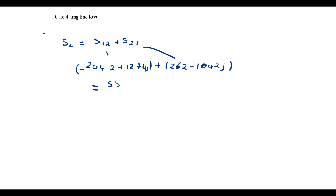Adding the two power flows gives 58 watts plus 230 VAR — the watts being the real component and the VAR being the reactive part. So what we can say is that the line absorbs 58 watts of real power and 230 VAR of reactive power.